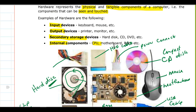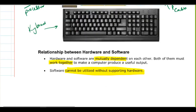Hardware components are classified into input devices, output devices, secondary storage devices, and internal components. Input devices include the keyboard, mouse, and touch screen. Output devices include the printer and monitor. Storage devices include the hard disk, CD, and DVD. Internal components include the CPU, motherboard, and RAM, among others.